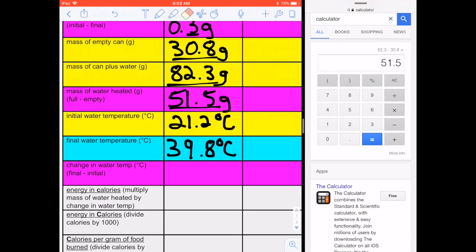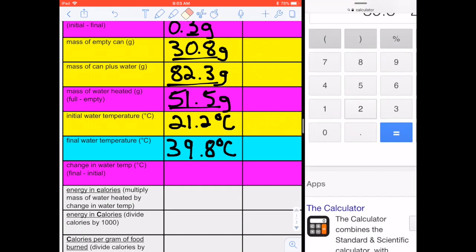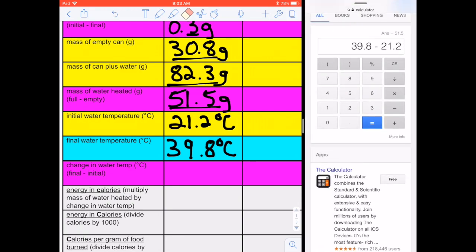And then the change in water temperature, final minus initial. So 39.8 minus 21.2 equals 18.6. So I just took the difference in those.